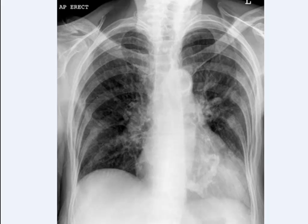What could be the reason for such orientation of anterior ribs? Well, this is the typical picture if a patient has kyphosis, which means hunchback or bowing of the spine in simple English.